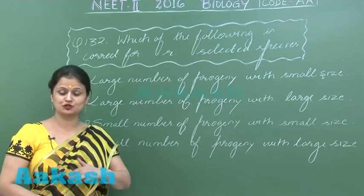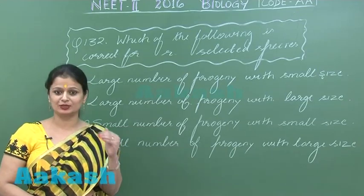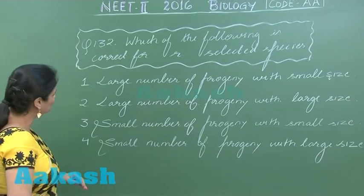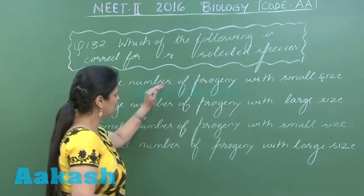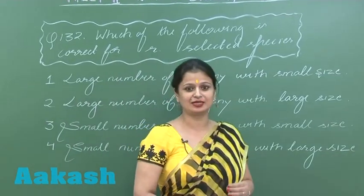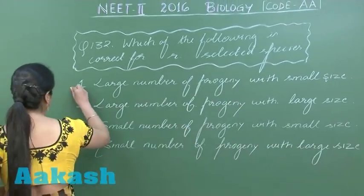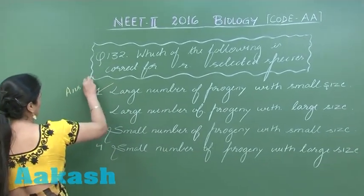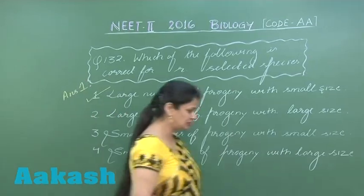They have a short lifespan but a high reproductive capacity, due to which they produce a large number of offspring. They also have a small body size. The right answer for this question is option number one. Now let's discuss question number 133.